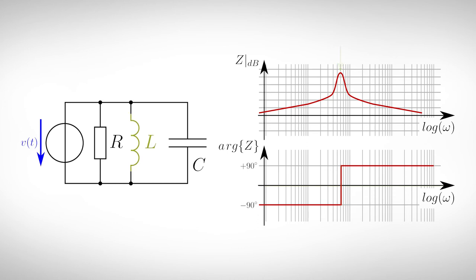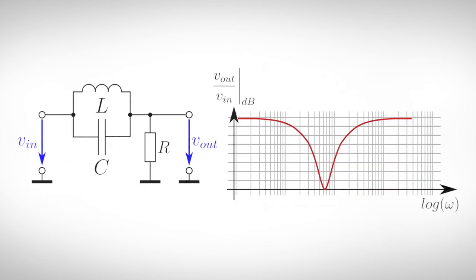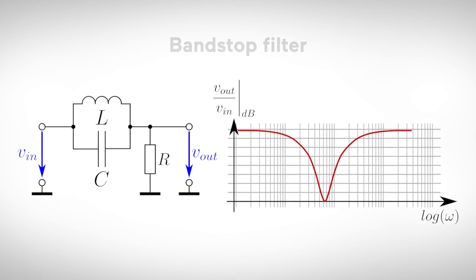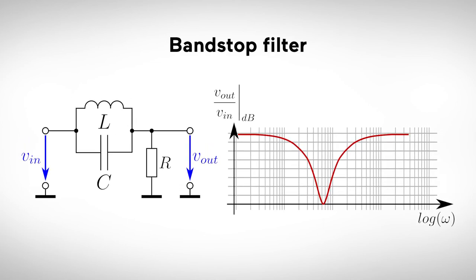Between the inductor and the capacitor will flow a current which is higher than the input current, and therefore this resonance effect is sometimes called current resonance. We can use this resonance to design a circuit that does exactly the opposite of the series connection. Instead of filtering out one single frequency, we can block a specific frequency. This circuit is called bandstop filter.